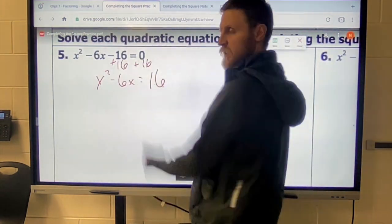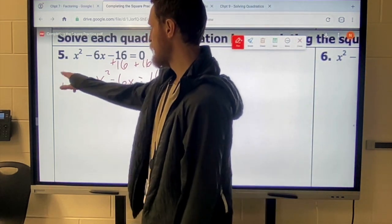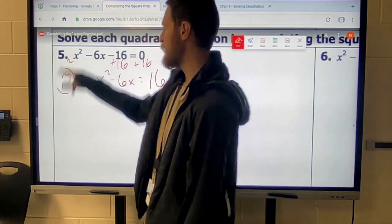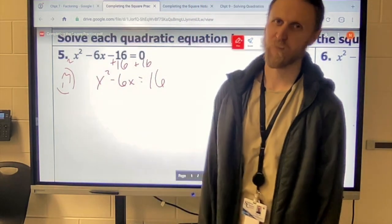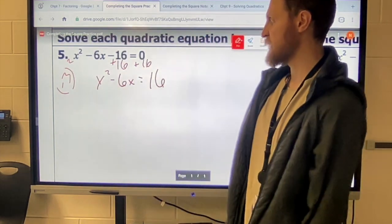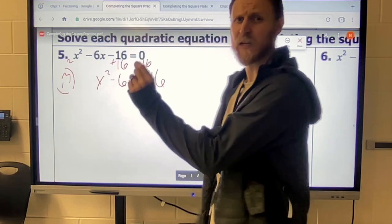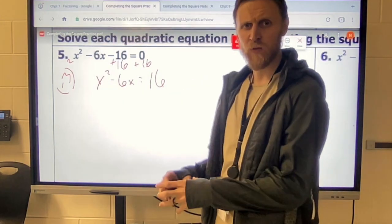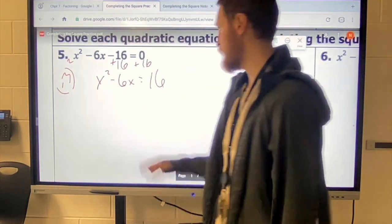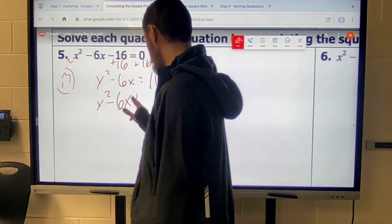So we take half of negative 6, which is going to be a negative 3, and then you square it. Negative 3 squared is 9. So that's how you get that magic number. You get the magic number by taking the b value, divide it by 2, and then square whatever it is you get. So in this case, it'll be 9.